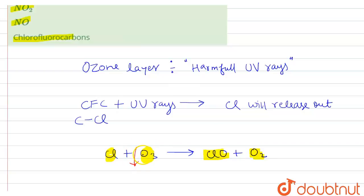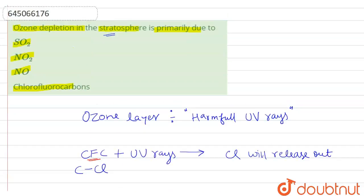So the major reason of depletion of ozone layer is CFC, chlorofluorocarbons. Let's check the option in the question - option D is the correct answer. Thank you.